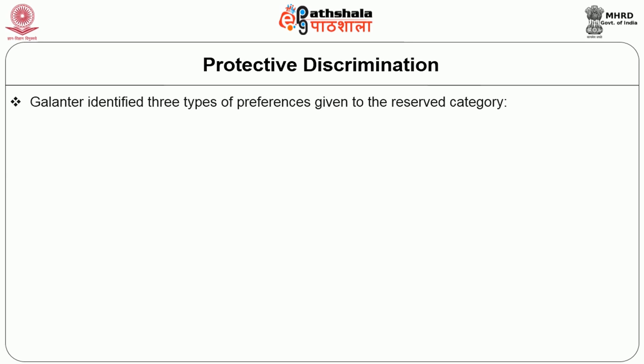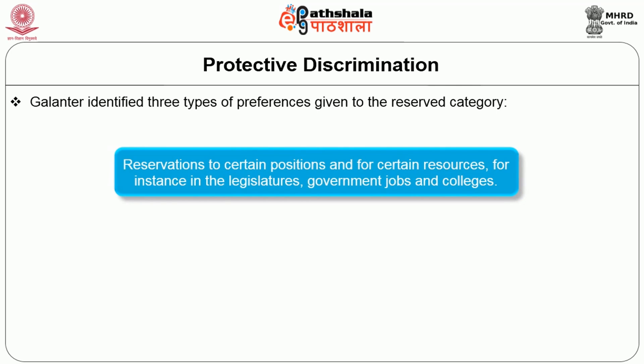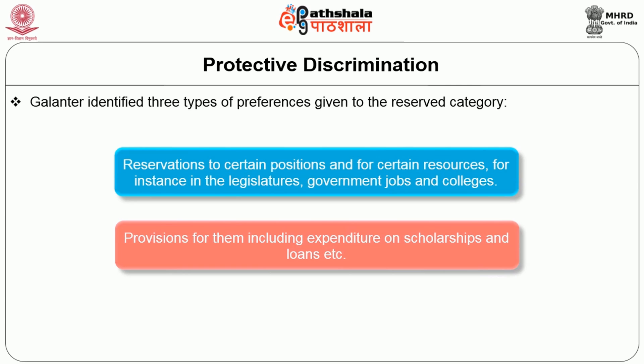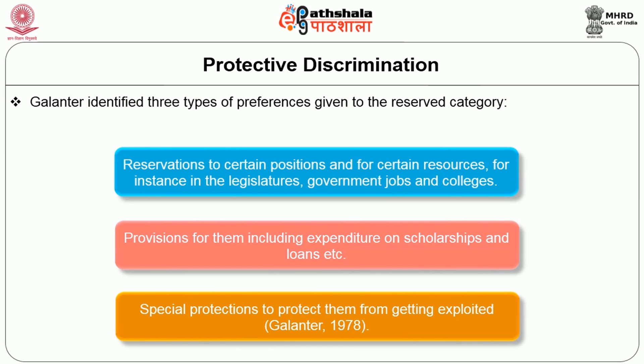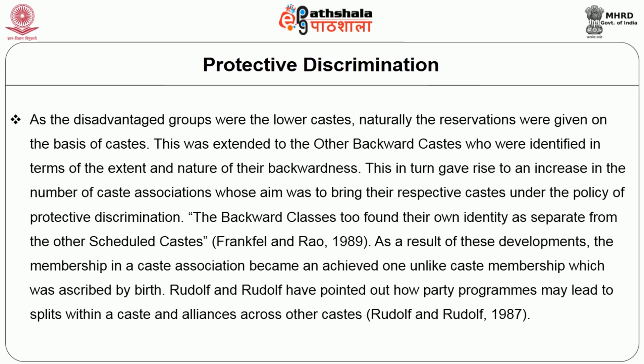Galanter identified three preferences given to the reserved category: 1. Reservations to certain positions and for certain resources, for instance in the legislatures, government jobs and colleges. 2. Provisions for them including expenditure on scholarships and loans, etc. 3. Special protections to protect them from getting exploited. As the disadvantaged groups were the lower castes, naturally the reservations were given on the basis of caste. This was extended to other backward castes who were identified in terms of the extent and nature of their backwardness. This in turn gave rise to an increase in the number of caste associations whose aim was to bring their respective caste under the policy of protective discrimination.